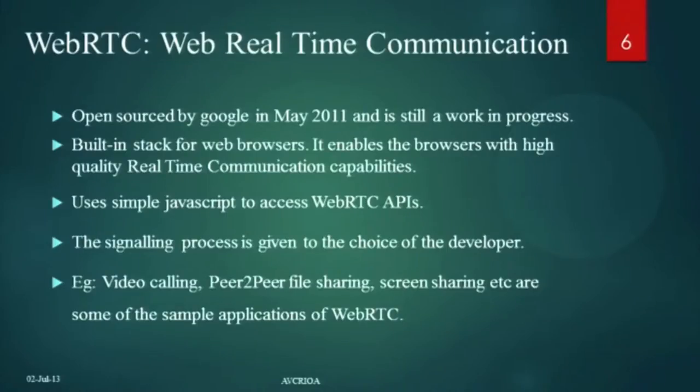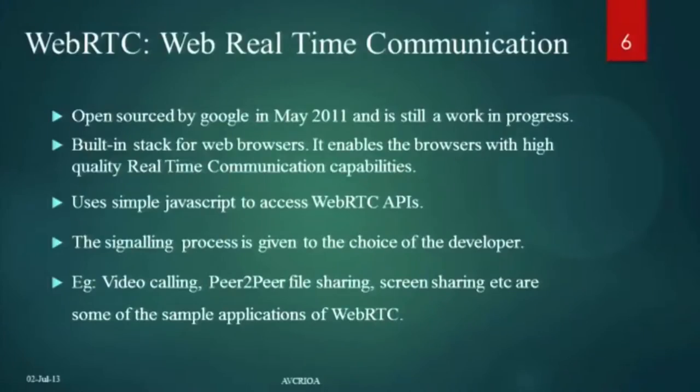In order for the two peers to communicate, identification must be done — each peer must know the address or means of communication of the other peer. For that purpose, a signaling process is needed. In the signaling process, the IP and port of one peer are transferred to the other peer and vice versa, so they can directly communicate. Importantly, WebRTC does not specify any default signaling mechanism — that choice is given to the developer.